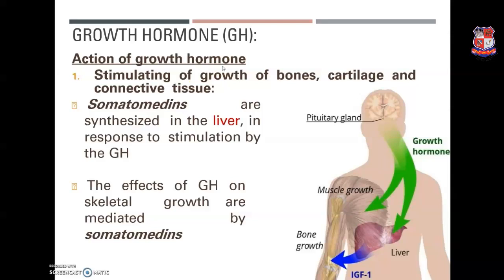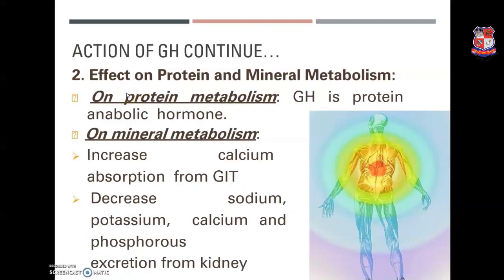Growth hormone is a peptide hormone secreted by the acidophilic cells of the anterior pituitary gland. Its main function is to increase body growth by stimulating cell reproduction and regeneration in humans and other animals. Its actions include stimulation of growth of bones, cartilage, and connective tissue; regulation of protein and mineral metabolism. It is a protein anabolic hormone — storing energy in the body. On mineral metabolism, it increases calcium absorption from the GI tract and decreases excretion of sodium, potassium, calcium, and phosphorus ions.